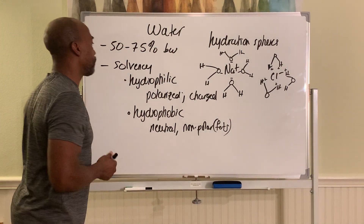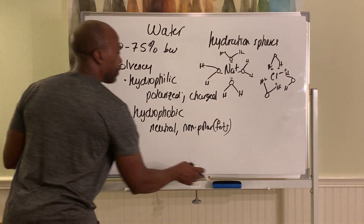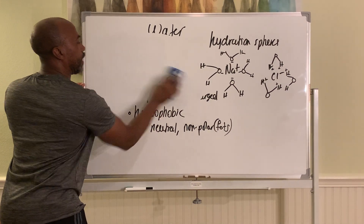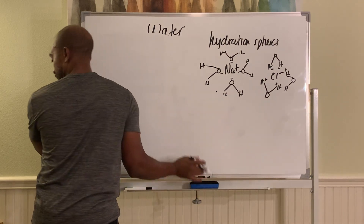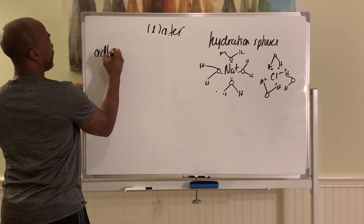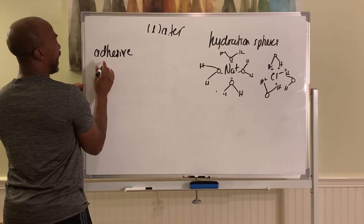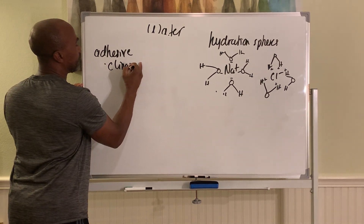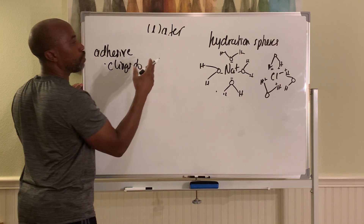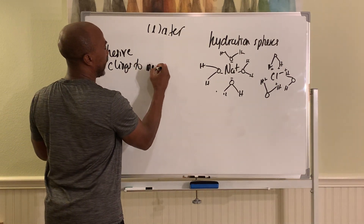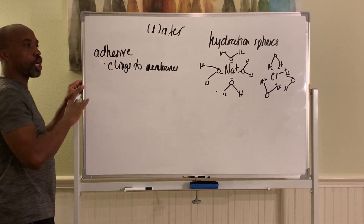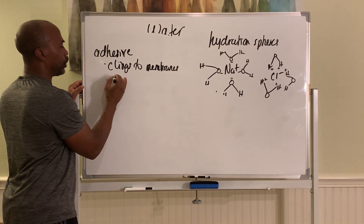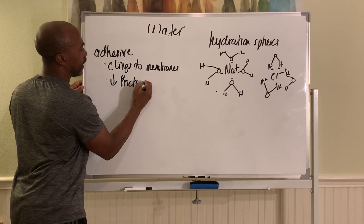And that's how water helps to dissolve things. Other properties of water that are useful for life-sustaining functions: water is adhesive. Adhesion refers to the property that allows water to cling to things — so water clings to tissue, to membranes. By having water coating things, it helps to reduce friction between membranes.